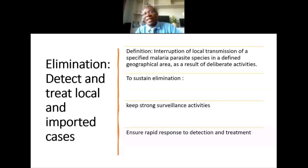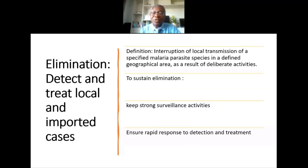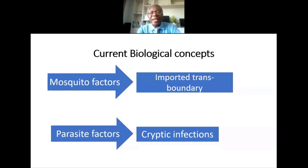Within a country, one can demarcate areas where transmission is low, start elimination there, and then move to other parts. Elimination is sustained through two key activities: surveillance to determine foci of infection, and ensuring any imported cases are immediately detected and targeted for treatment. The current biological concepts bring important issues that must be considered when putting operational activities in place to eliminate the parasites. There are two factors I will highlight: the mosquito factor and the parasite factor.